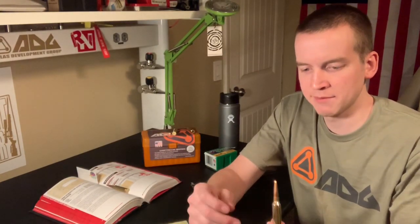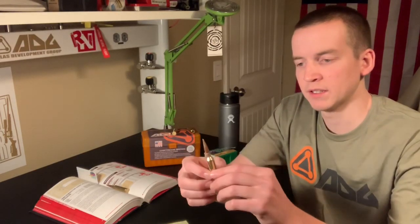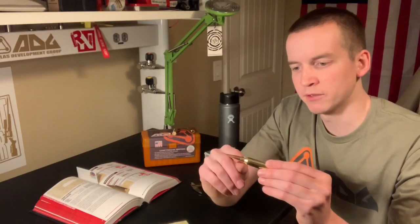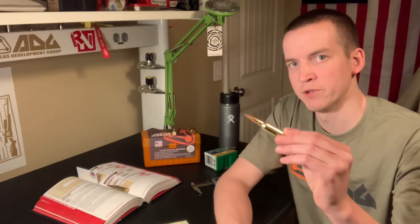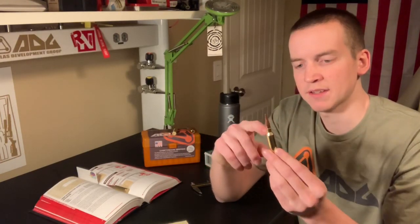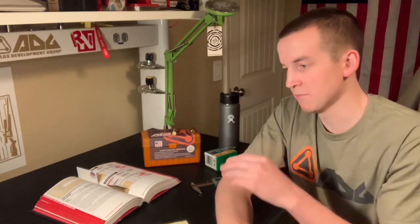And I sent them a dummy round with an overall length on the 180 set to where I want it, and so we're going to chamber it for 7 millimeter SAUM and then they're going to punch out the throat a little bit longer so that it has room for the 180s but the bullet isn't going to be smashed way down into the case. So I'm going to get more room for powder compared to my WSM.